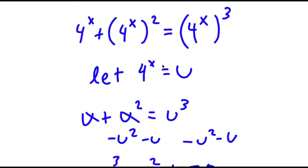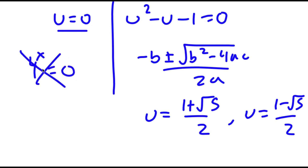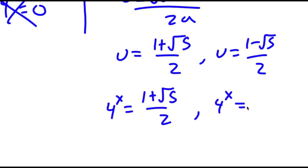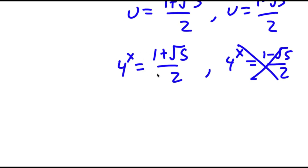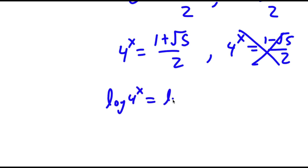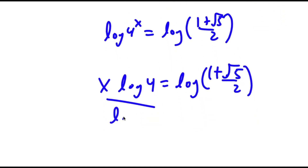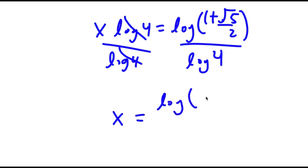Now remember we set 4 to the power of x equal to u. So first, 4 to the power of x equals 0 has no solution because you can't raise a number to a power and get 0. For u equals (1 minus the square root of 5) over 2, that's a negative number and you can't raise a positive base to a power and get a negative result, so that's no solution either. So I have 4 to the power of x equals (1 plus the square root of 5) over 2. Taking log on both sides, x times log 4 equals log of (1 plus the square root of 5) over 2, giving x equals log((1 plus the square root of 5) over 2) over log 4.